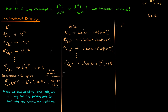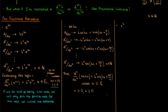If we extend this to the fractional derivative setting, the fractional derivative of sine kx of order a would be k to the a times sine of kx plus a pi over 2, where a is some complex number. Again, both x and k are non-negative in this definition.